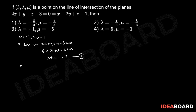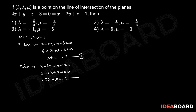Also, P lies on x - 2y + z - 1 = 0, which implies 3 - 2*lambda + mu - 1 = 0. This implies -2*lambda + mu = -2. Consider this as equation number 2.